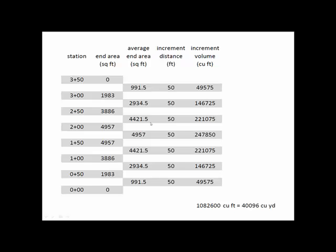Well those end areas are in this column averages. I can multiply those averages times the increment distance that is the 50 feet between each pair of sections. And then get my increment volume in cubic feet. And then it sums down to a total again of 1,082,600 cubic feet or 40,096 cubic yards.